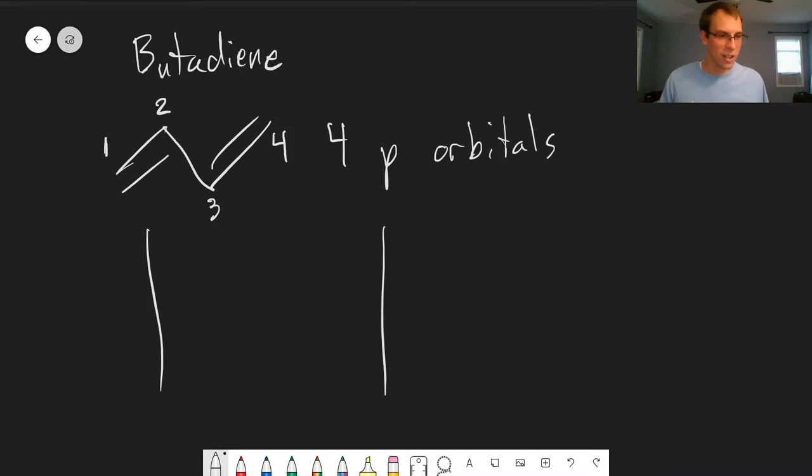Alright, so hopefully you actually did it. If you didn't, we'll still just go through it together. So the secular determinant we get, and this will be general, everything along the diagonal is going to involve our alpha integrals, alpha minus E, and that'll be true for everything along the diagonal.